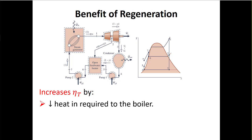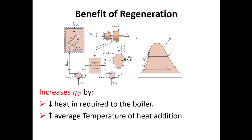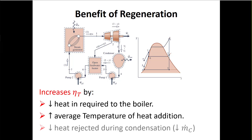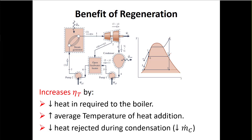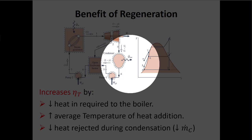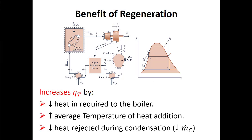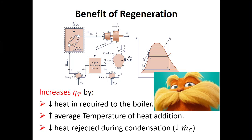This process increases thermal efficiency because it reduces the heat required from the boiler — we can run this cycle with less heat. The textbook talks about this as increasing the average temperature of heat addition. Also, because we're rejecting less heat — we're not cooling down as much mass flow — we're effectively wasting less heat, which increases our thermal efficiency.